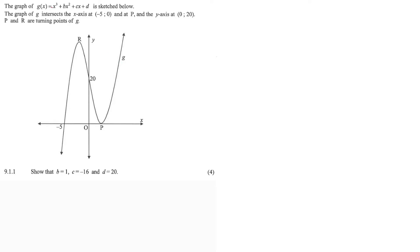We have a cubic function here. The graph of G(x), sketched below, has unknown variables B, C, and D. A is equal to 1. The graph of G intersects the x-axis at negative 5, at 0, and at P. P's coordinates are unknown, and the y-intercept is at 20. P and R are the turning points — the stationary points of G.